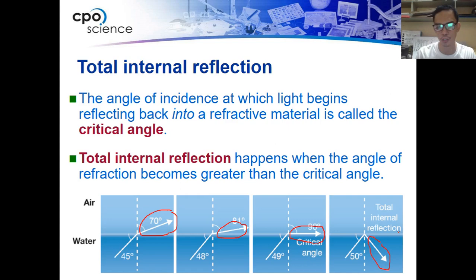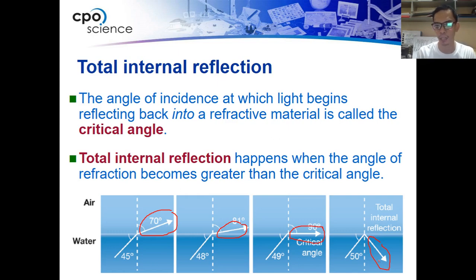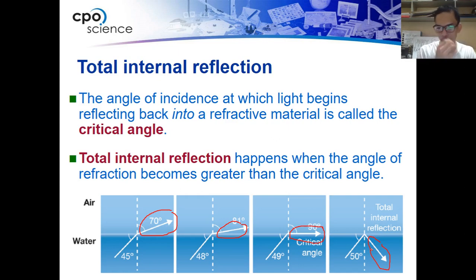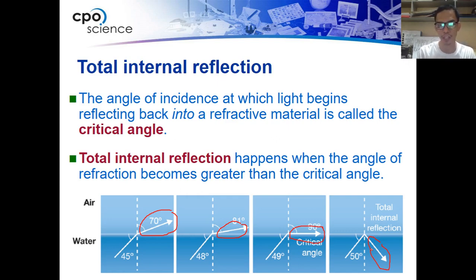Meaning to say the light ray is not refracted; it is reflected back to the refractive material, which in this case is water. In the case of diamond, the light inside the material is being reflected back to the refractive material — the diamond. That's the reason why if you shine a light on a diamond, it looks glittering.